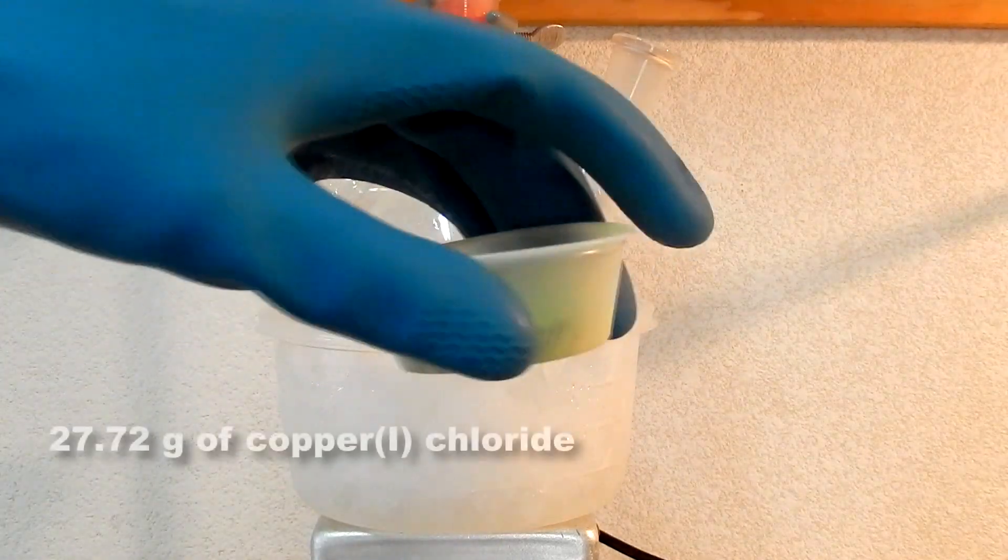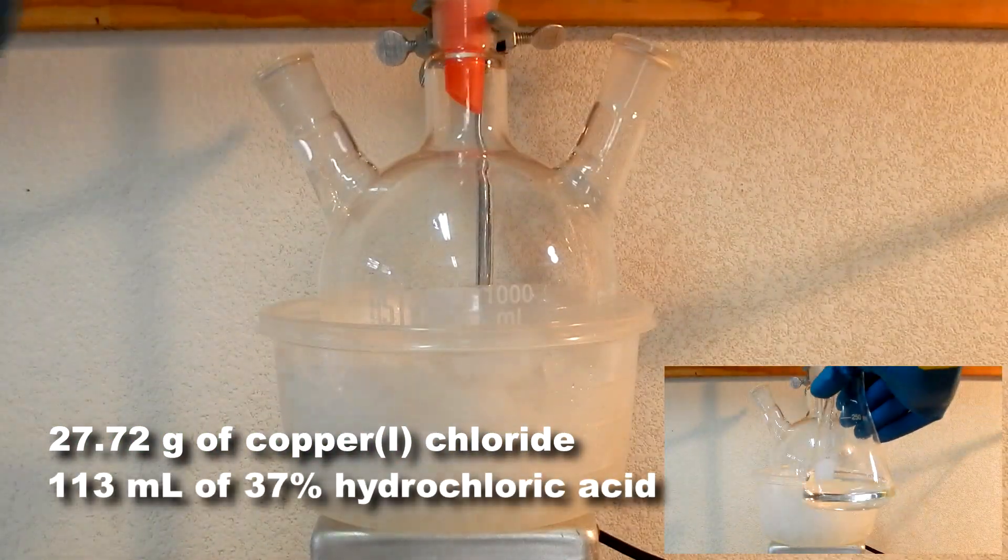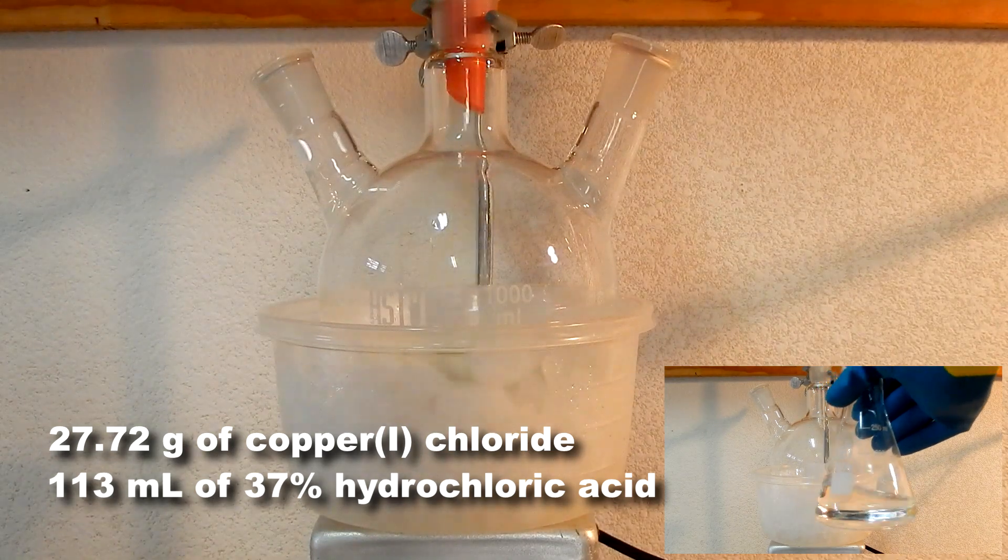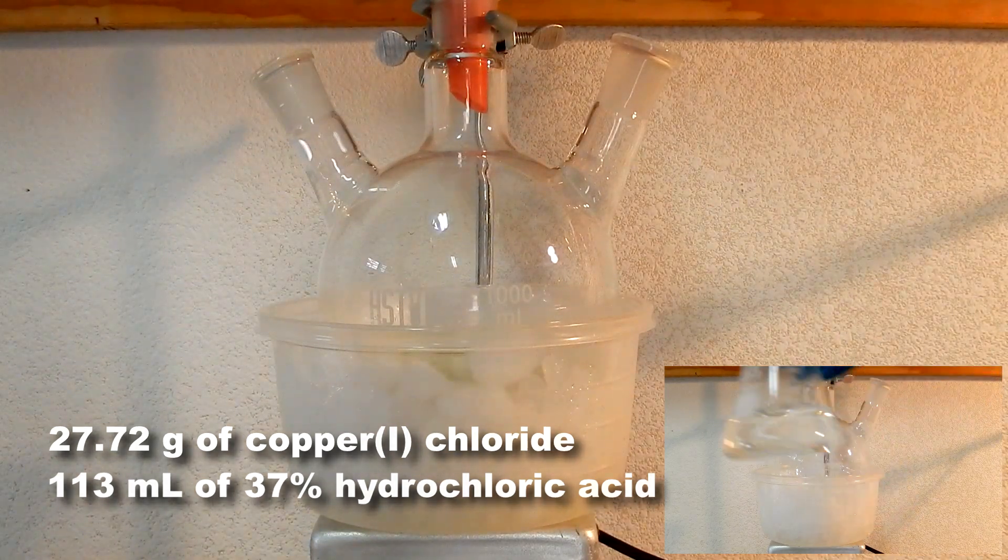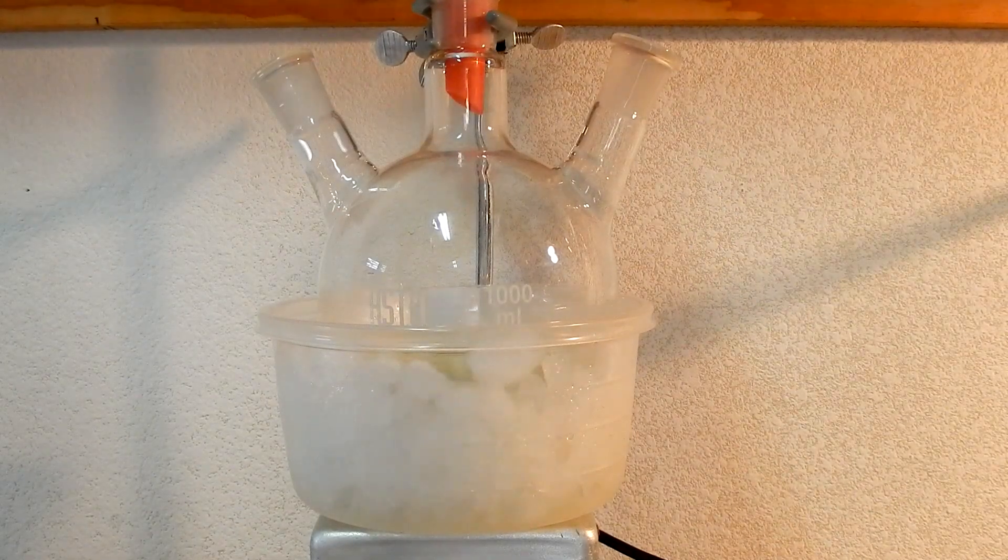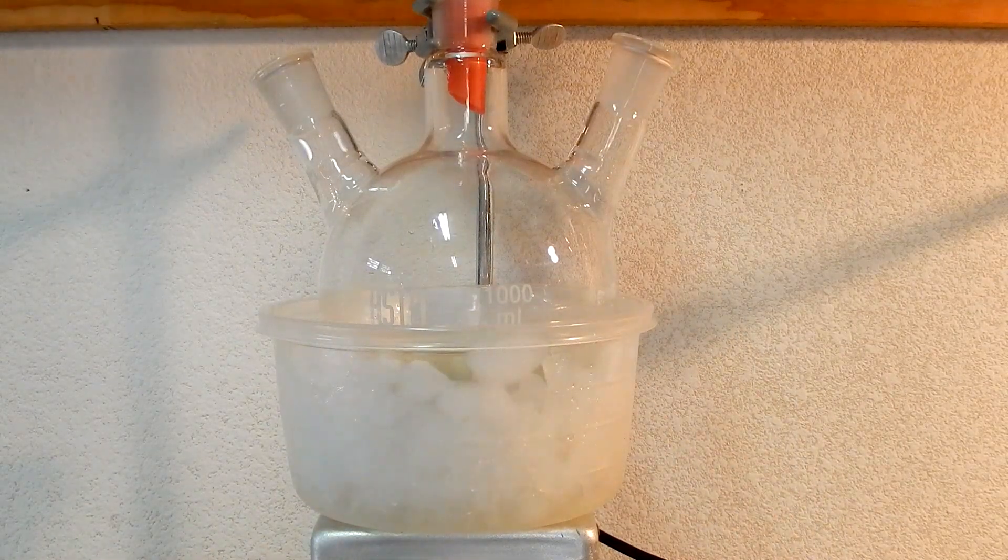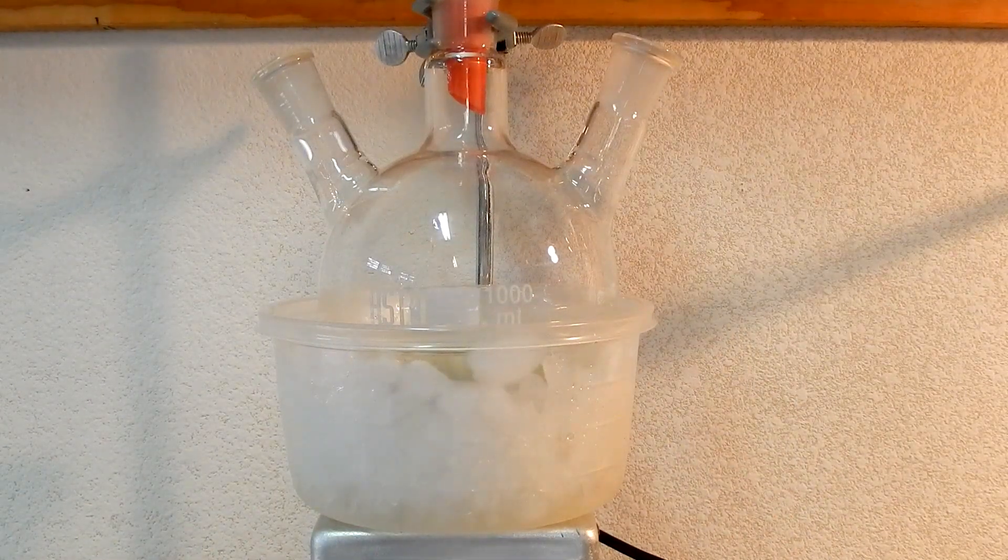Meanwhile, dissolve 27.72 grams of copper 1 chloride and 113ml of 37% hydrochloric acid in a 1-liter 3-neck round bottom flask. The resulting solution is dark green to black. Place the flask in a salt ice bath on top of a magnetic stirrer. Allow the temperature to drop to 0 degrees Celsius or below.